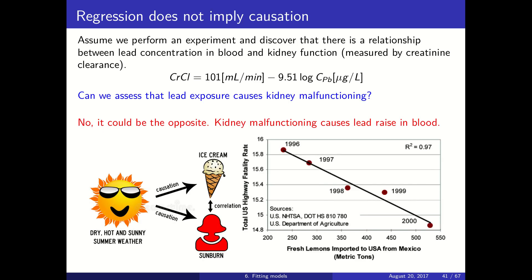Let's say that we perform an experiment and we see that there is a very strong relationship between the clearance of creatinine, which measures kidney function, and the concentration of lead in blood. We see that this clearance decreases with higher concentrations of lead. So the higher the concentration of lead, the less the kidney is functioning.